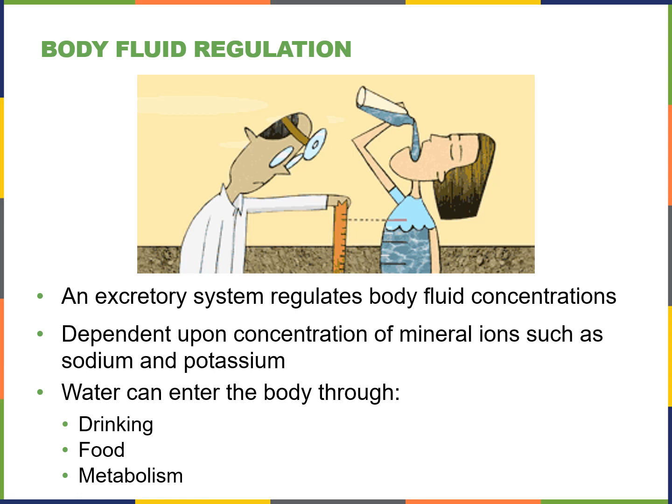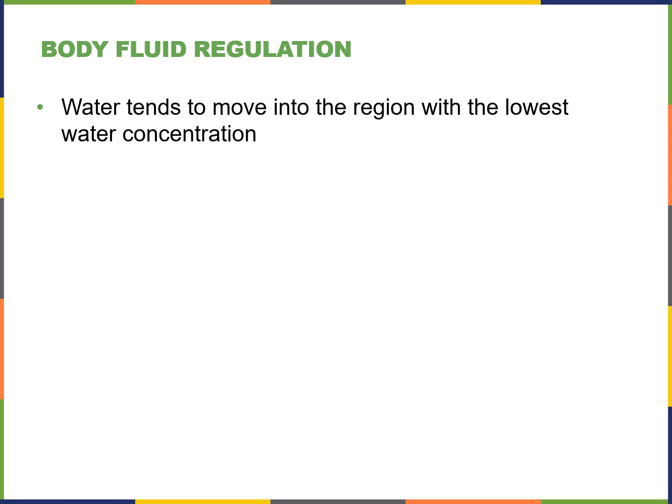All of this is happening throughout our body and in the excretory system, where we're regulating our body fluid concentrations. It depends on the concentration of mineral ions like sodium and potassium. We get water through drinking, food, or metabolism. Water tends to move into the region with the lowest water concentration — always from high to low — by simple diffusion, moving from a high concentration gradient to a low one.